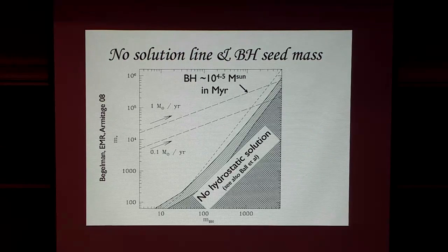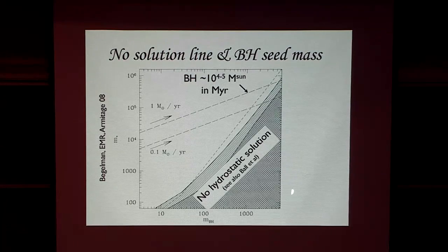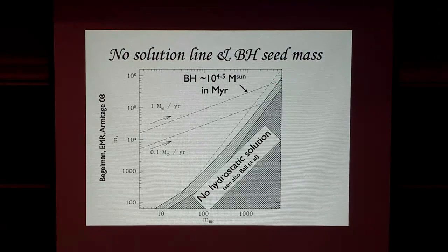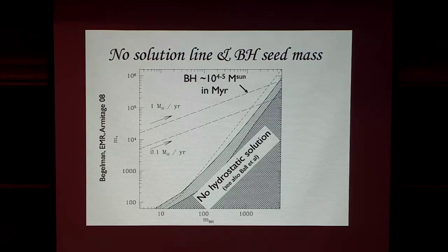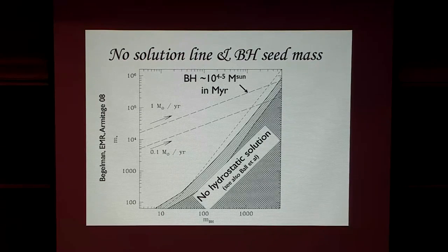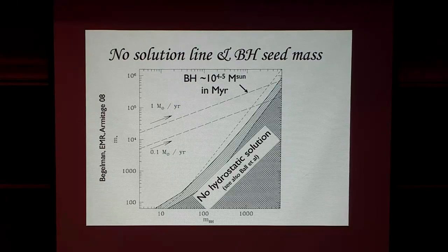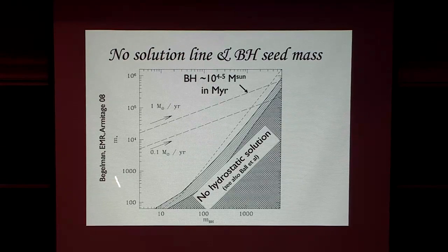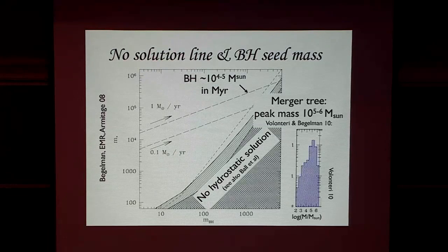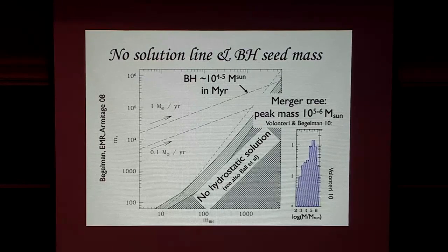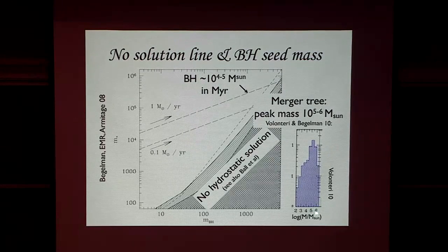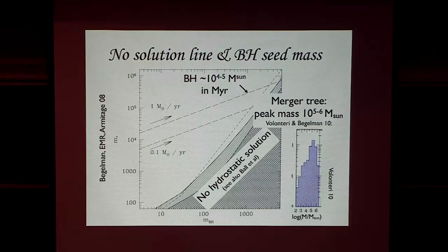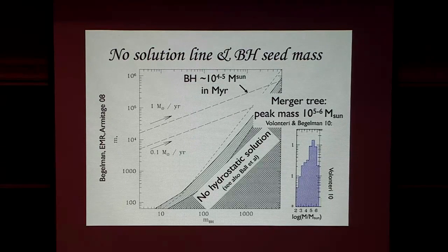What we found at that time is that you can form, for instance, 10 to the 4 solar mass black hole in one million years. After that, you hit this no-solution zone. What we think is that at that point, the black hole is big enough that it unbinds this innermost part, and then accretion proceeds normally from the outer part of the disk. Putting this physical ingredient into emergent tree simulations, these authors found that the average mass of the seeds is around 10 to the 5, 10 to the 6. I'm going to challenge this.